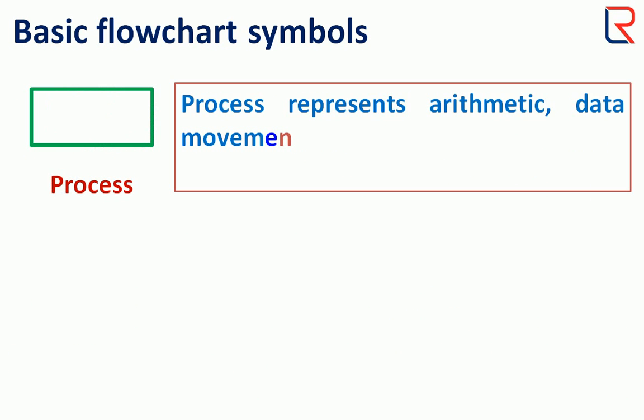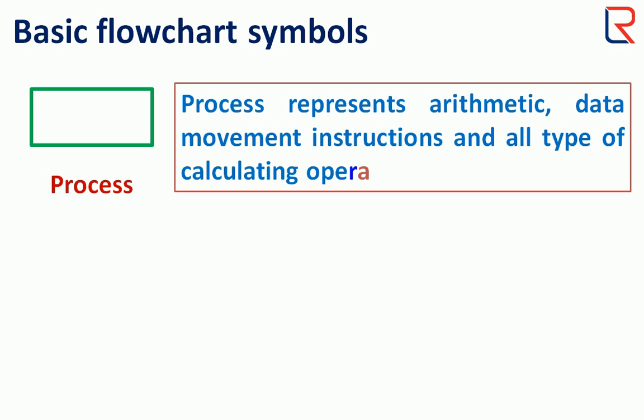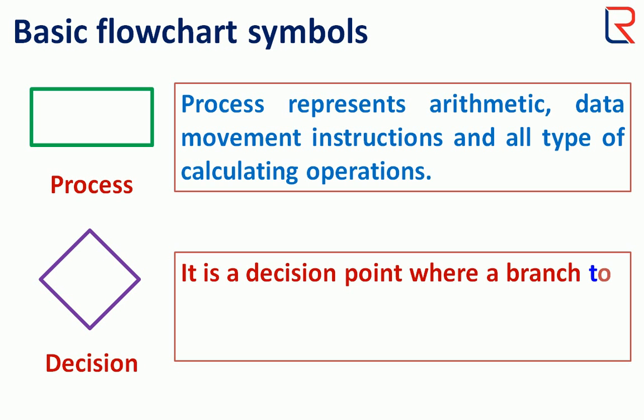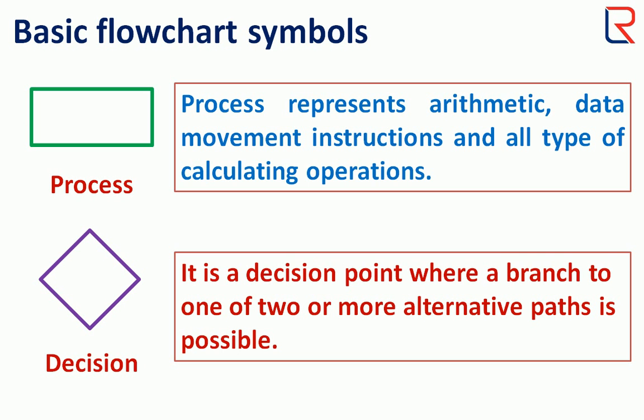Process represents arithmetic data movement instruction and all types of calculating operations. Decision box is a decision point where a branch to one of two or more alternative paths is possible.